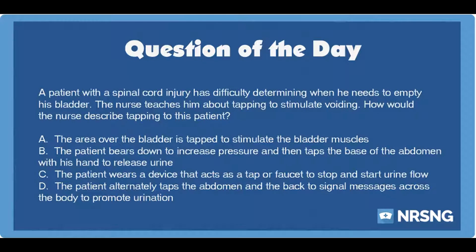A. The area over the bladder is tapped to stimulate the bladder muscles. B. The patient bears down to increase pressure and then taps the base of the abdomen with his hand to release urine. C. The patient wears a device that acts as a tap or faucet to stop and start urine flow. D. The patient alternately taps the abdomen and the back to signal messages across the body to promote urination.